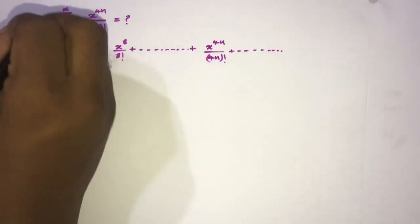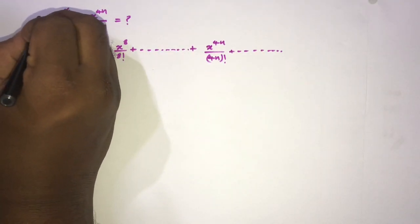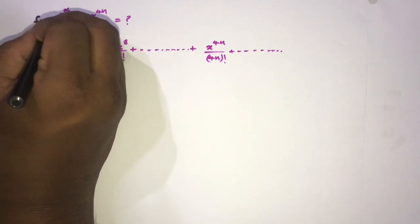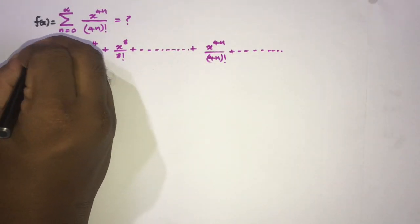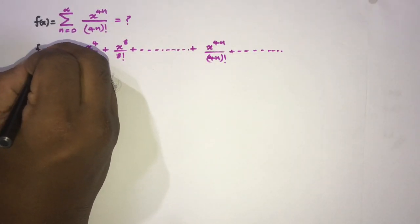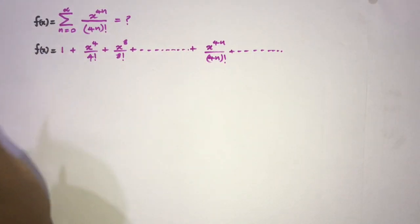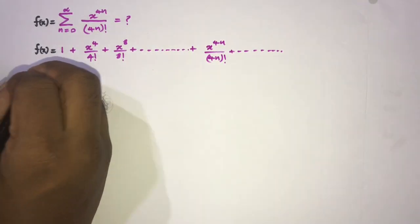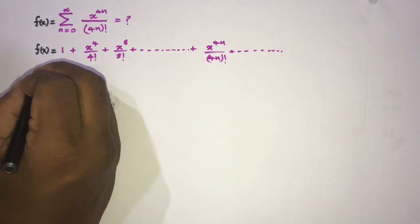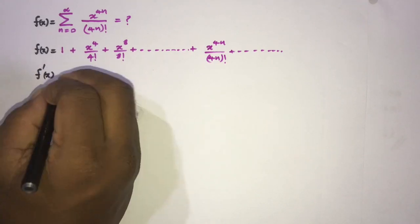First of all, I am going to take this series as equal to f of x, so we know this is also equal to f of x. Now we are going to find the derivative.